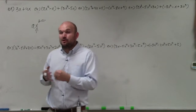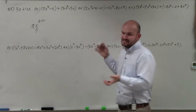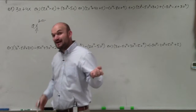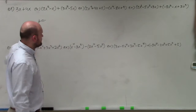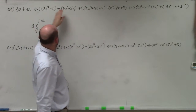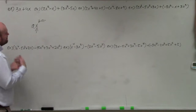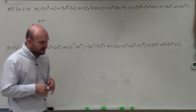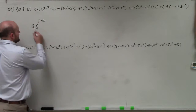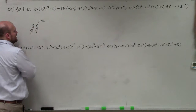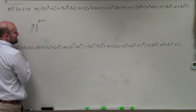Not only does the base have to be exactly the same, the power has to be exactly the same. I can only combine like terms when the base is exactly the same — which in this case all the bases are x — but the power has to be the same too. That's what I want to focus on in this video. When we combine like terms, we're basically going to combine the coefficient and leave the exponent as it is.